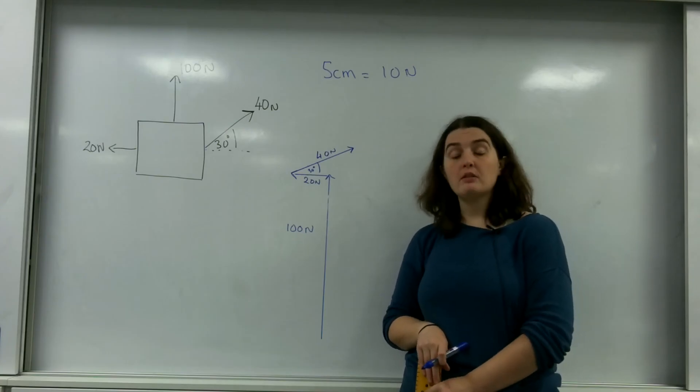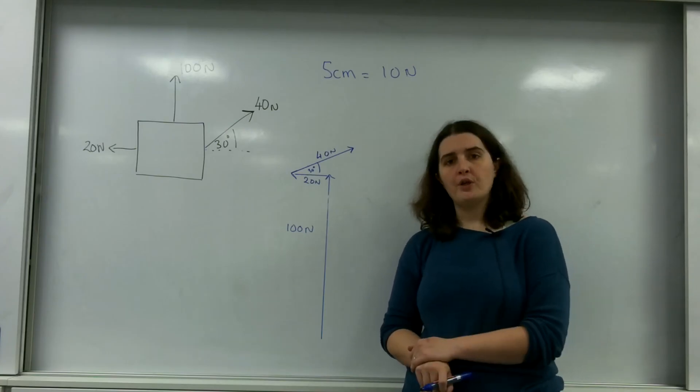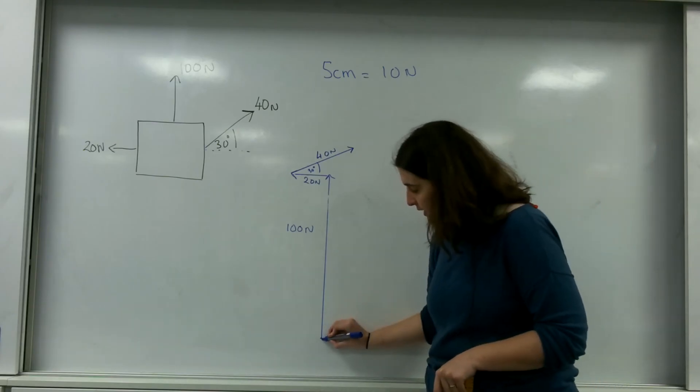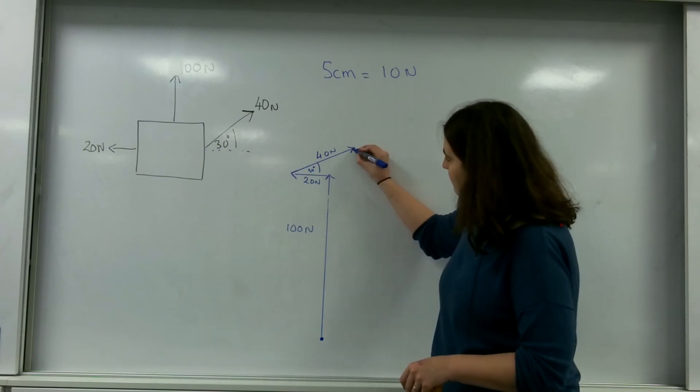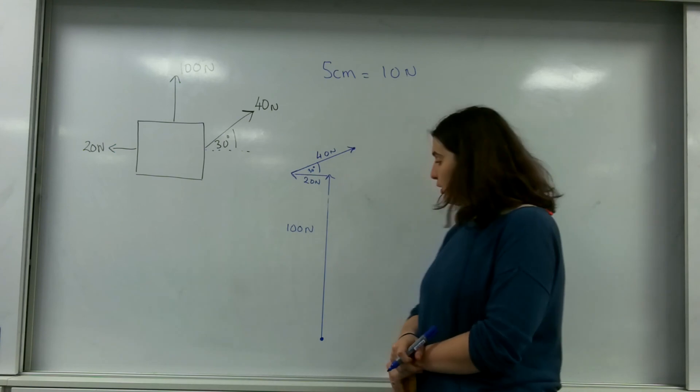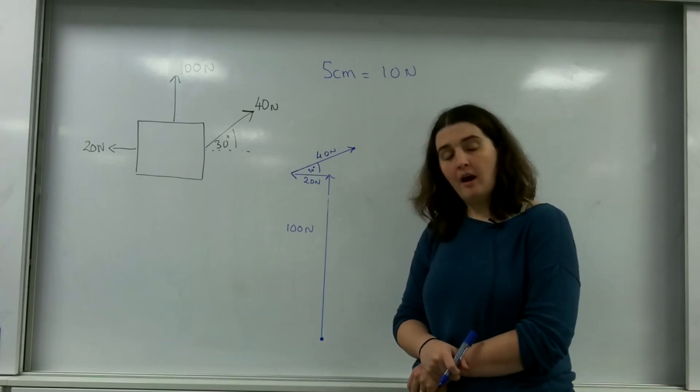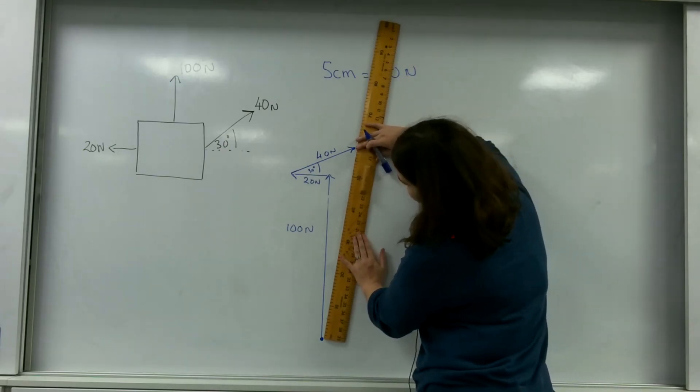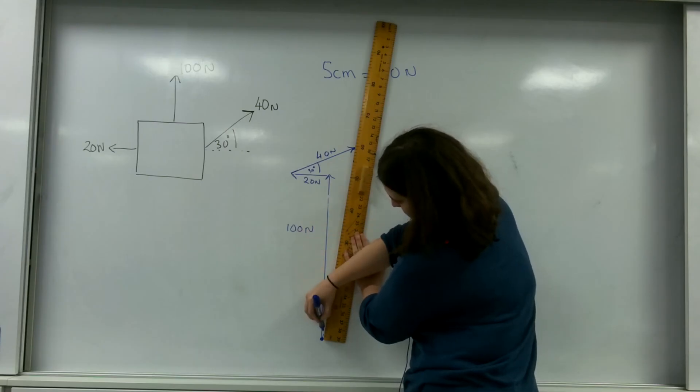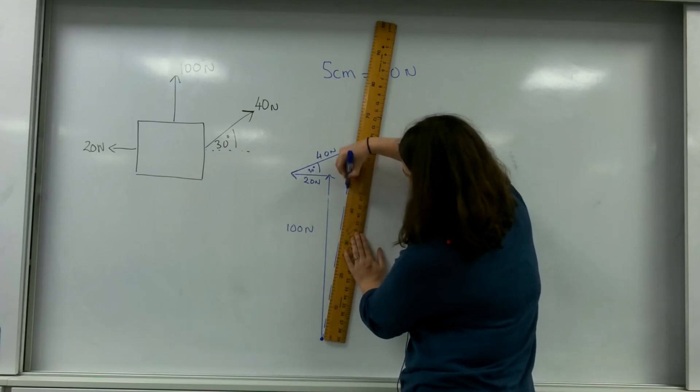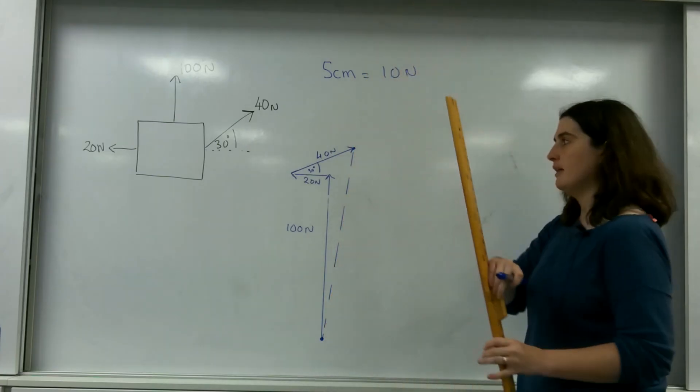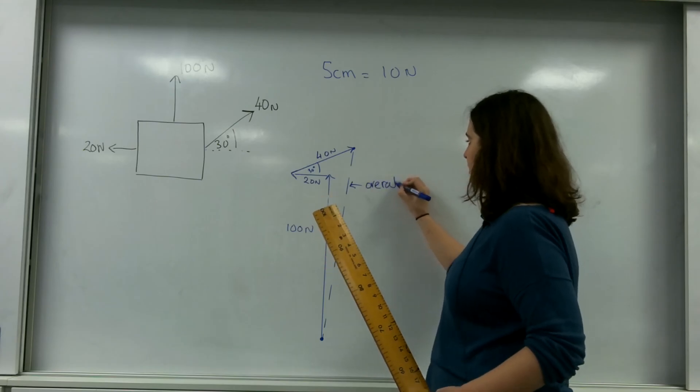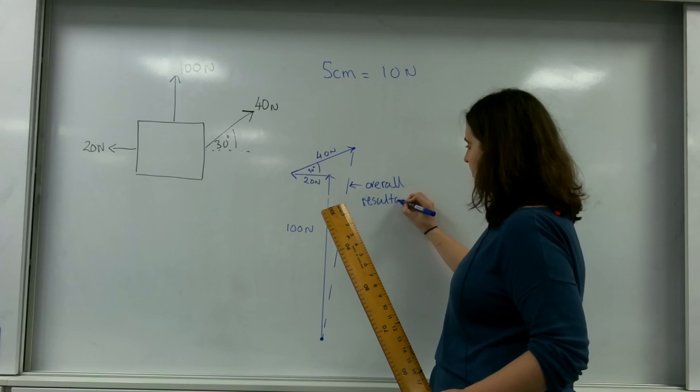How you find the resultant, the overall vertical force on this diagram, is you literally join the tail here to the arrowhead here. And because this is a scale diagram, I can actually just measure it. I'm going to represent my resultant by a dashed line. So this here is my overall or my resultant force.